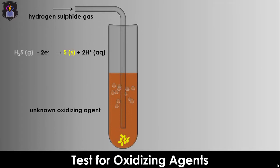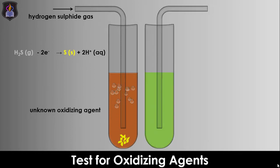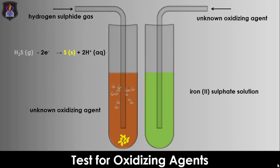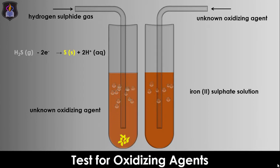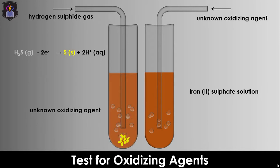Similarly, if we bubble a stream of an unknown gas or add an unknown solution to a solution of freshly prepared iron-2 salt and observe the color of the iron-2 solution change from green to reddish brown, then the unknown gas is an oxidizing agent. This is because the iron-2 ions in the solution are oxidized to iron-3 ions, as shown in the second oxidation half equation.